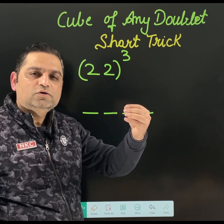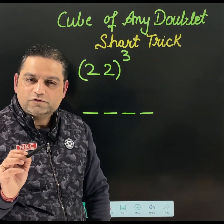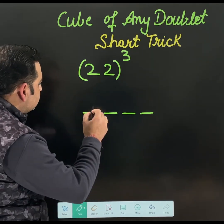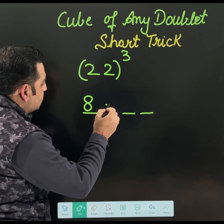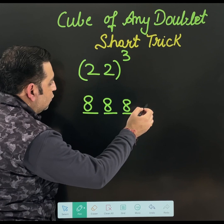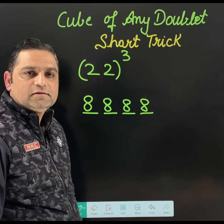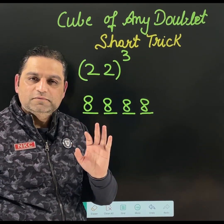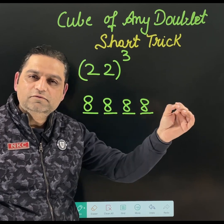Then do the cube of 2 only. Cube of 2 is 8. What you need to do, write 8 at all the spaces. This is the first step, writing 8 at all the 4 places.